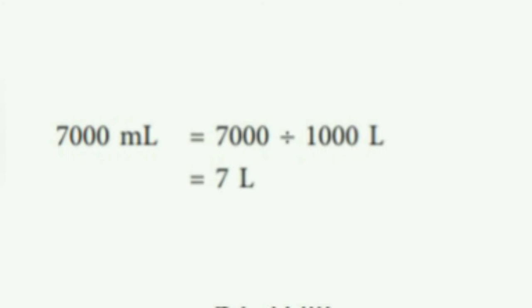Let's see how to convert milliliters to liters. Here we have to express 7000 milliliters into liters. To convert milliliters into liters, divide that number by 1000. Let's divide. 7000 divided by 1000 equals 7. So 7000 milliliters equals 7 liters.